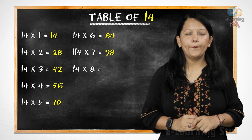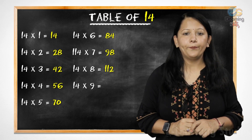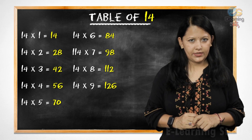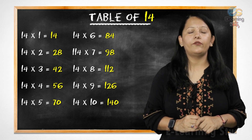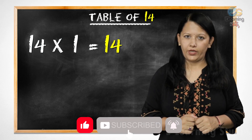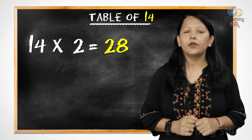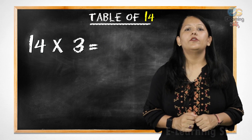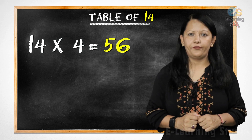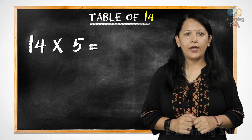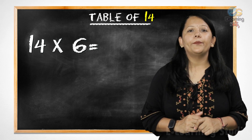14 eights are 112, 14 nines are 126, 14 tens are 140. 14 ones are 14, 14 twos are 28, 14 threes are 42, 14 fours are 56, 14 fives are 70, 14 sixes are 84.